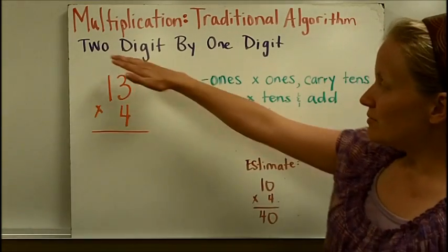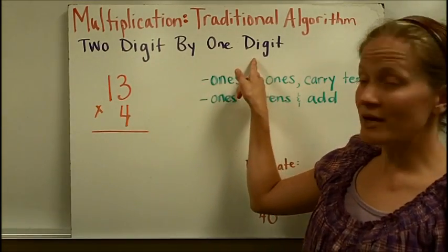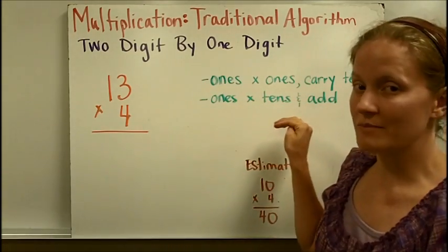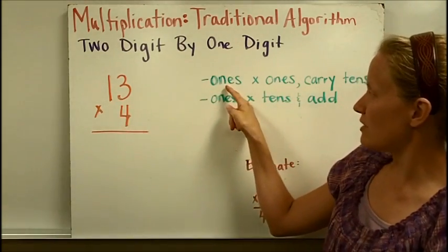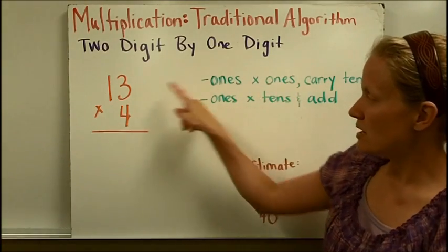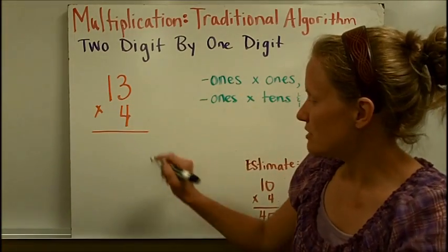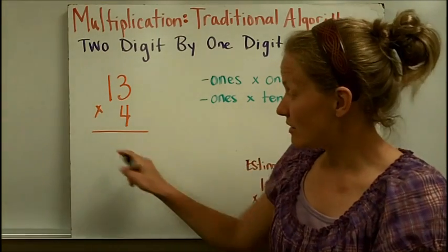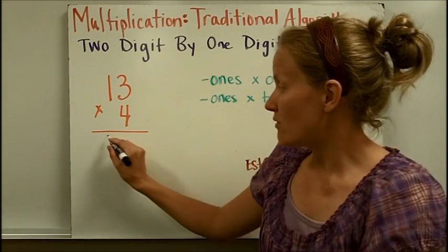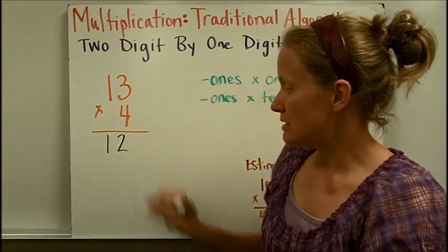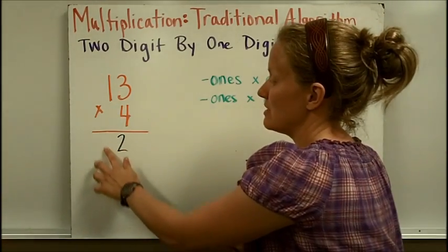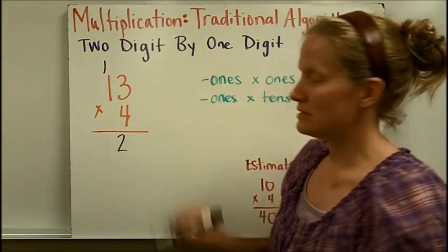When we multiply a two digit by one digit problem, we're going to see the steps over here each time. Let's just follow these steps as we go through. We're going to multiply the ones times the ones, so 3 times 4 is 12, but we're going to carry the tens. In the partial product method you just wrote 12 right here, down under the line. But this time instead of putting that tens digit there, we're going to carry the tens digit.